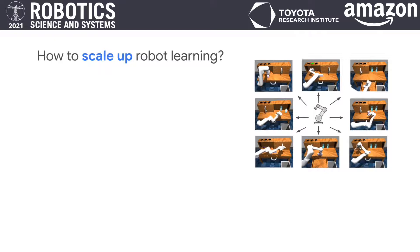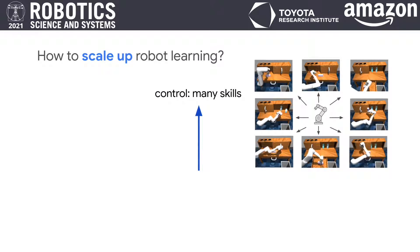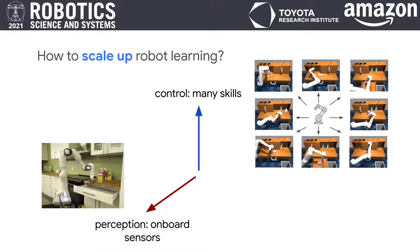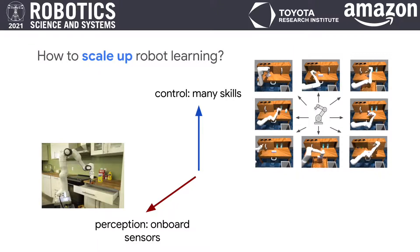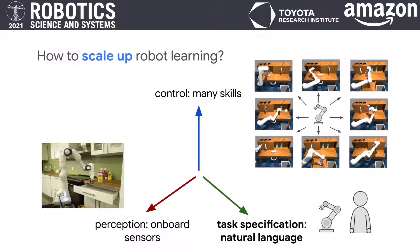How can we scale up robot learning to everyday settings? Recent work is focused on scaling up multitask control, moving from robots that learn individual skills to ones that learn many. Additionally, many are focused on more scalable perception, moving from instrumented setups to robots that learn directly from onboard sensors. Another important but less studied direction is how to scalably specify tasks — what is the most natural way for untrained users in everyday settings to guide all of these learned robot behaviors? This motivates robots that are capable of following free-form natural language instructions.